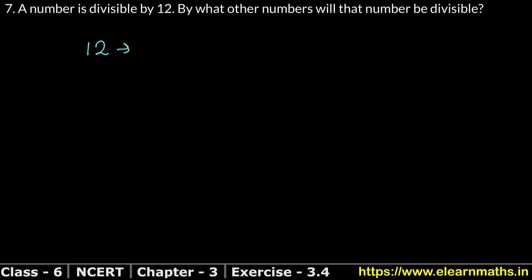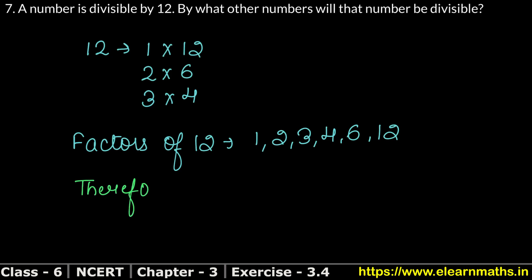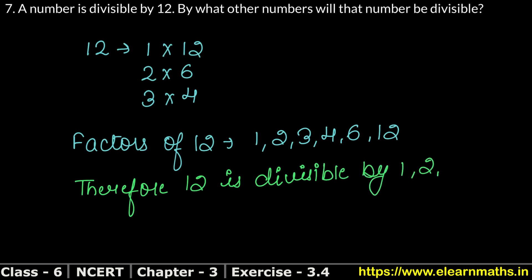12 is divisible by 1, 2, 3, 4, 6, and 12. So the factors of 12 are 1, 2, 3, 4, 6 and 12. Therefore, a number divisible by 12 is also divisible by 1, 2, 3, 4, 6, and itself.